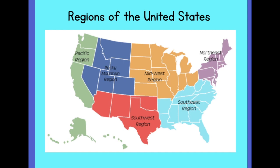In class, we compared and contrasted the regions of the United States by climate, physical features, and population. We learned how the location of regions affects the way people live, including their food, clothing, shelter, transportation, and recreation. What region do we live in? What was your favorite region? What do you remember about the regions we learned about?